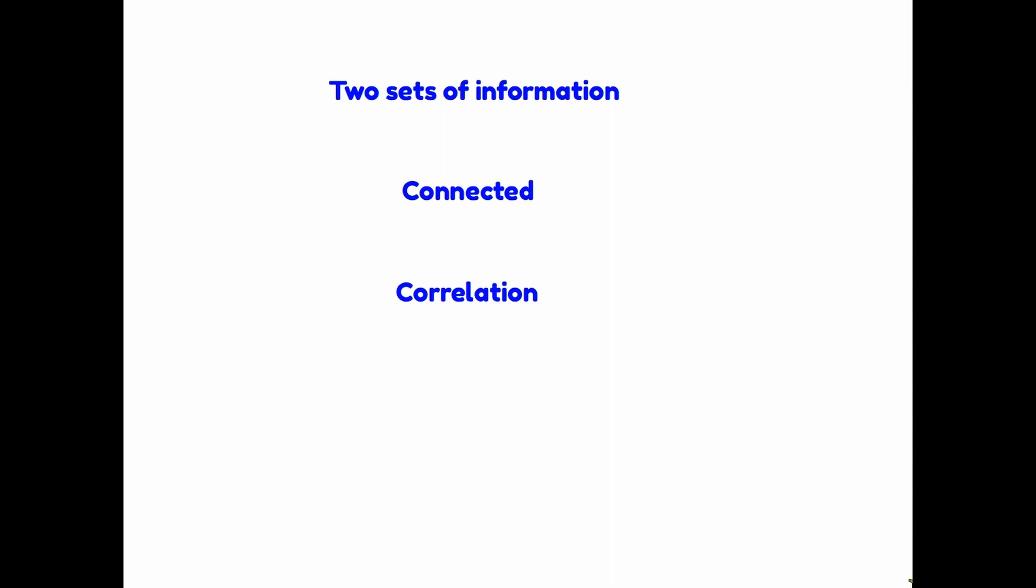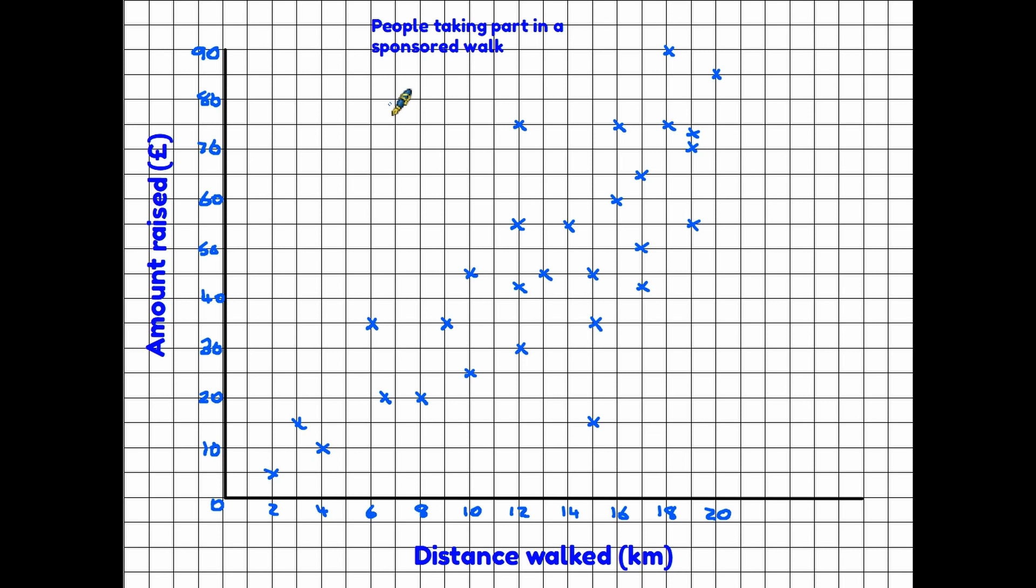Let's look at an example and see how this works. Here we have a scattergraph about people taking part in a sponsored walk. Along the bottom it tells us the distance walked on the sponsored walk, and up the side it's telling us about the amount that people have raised. These are our two sets of information - the distance walked and the amount raised. Each cross represents a person that's taken part in the sponsored walk.